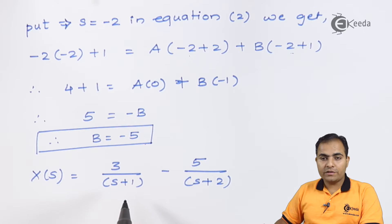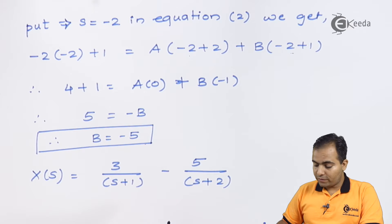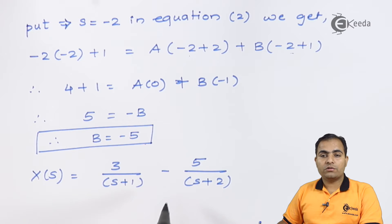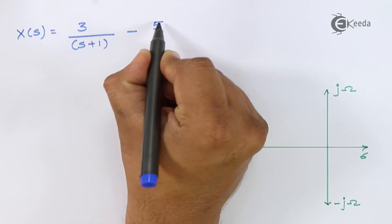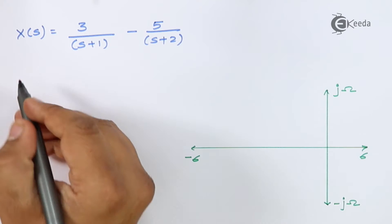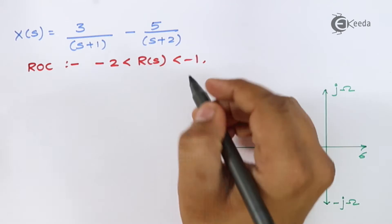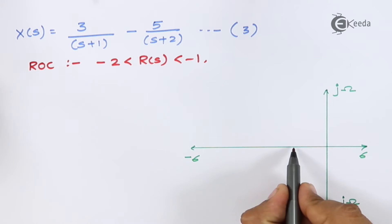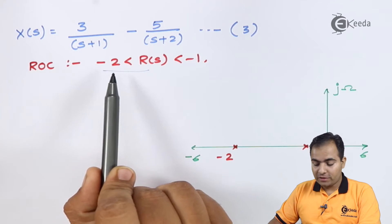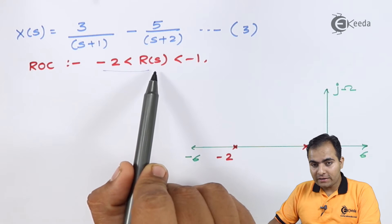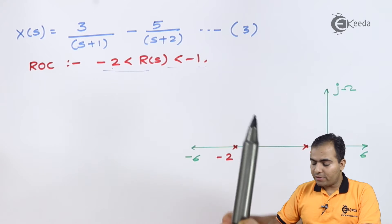This gives us equation number three: X(s) = 3/(s+1) + (-5)/(s+2). I'm going to apply inverse Laplace transform on this equation, but first let's go through the ROC so we understand what the solution is for the given ROC.